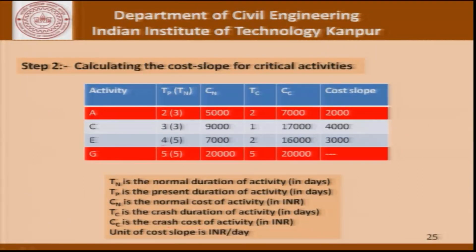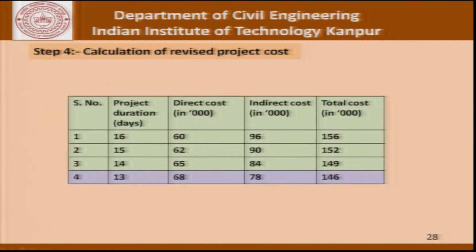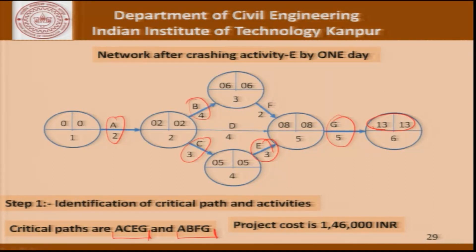We still find that the critical path is A, C, E, G. We can still crash activity C since 4 can still become 2. After crashing E again by 1 more day, the project duration becomes 13 days and cost becomes 146,000. Now we find that the critical paths are both A, C, E, G and A, B, F, G. So activities B and F have also now become critical.